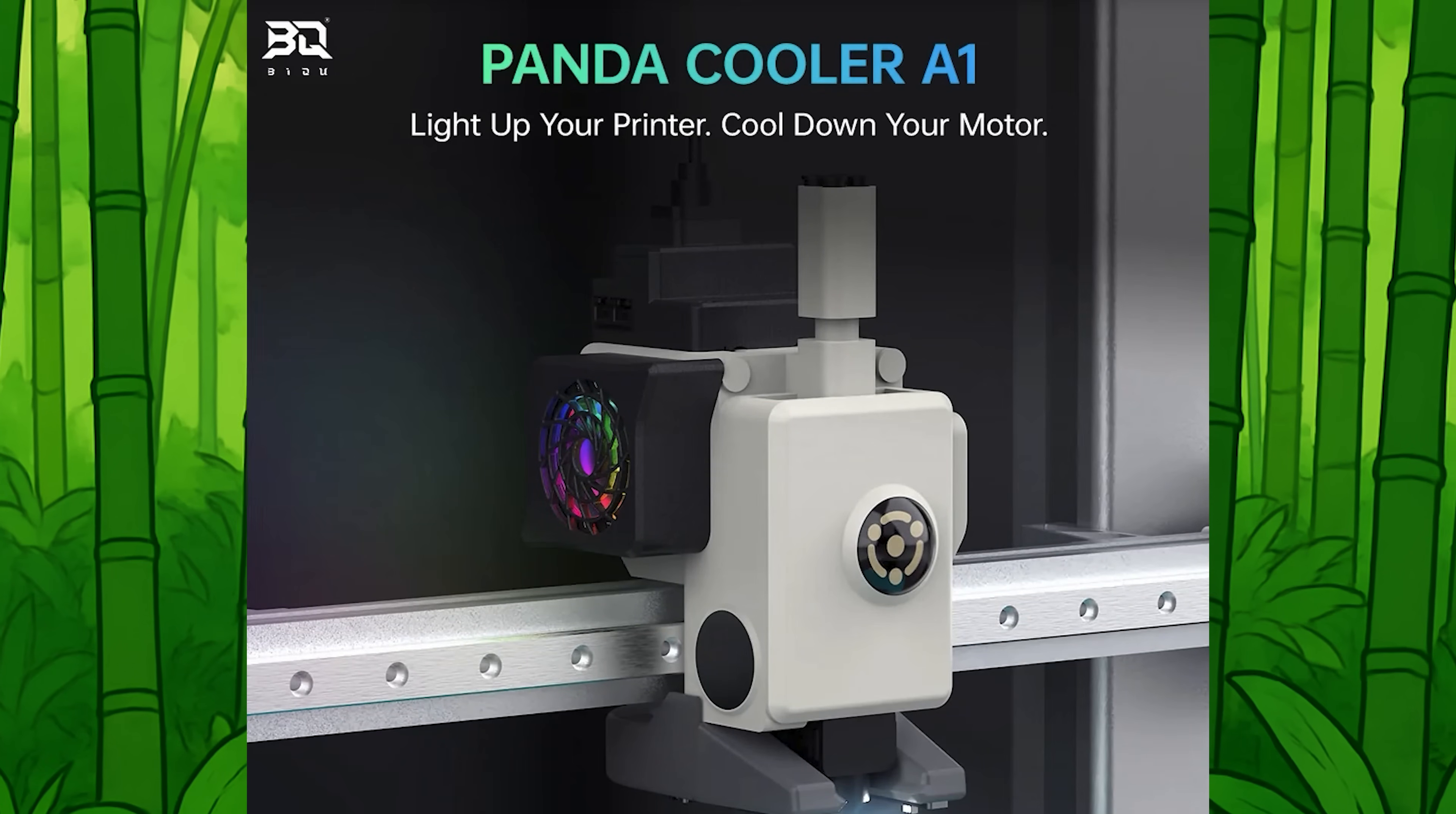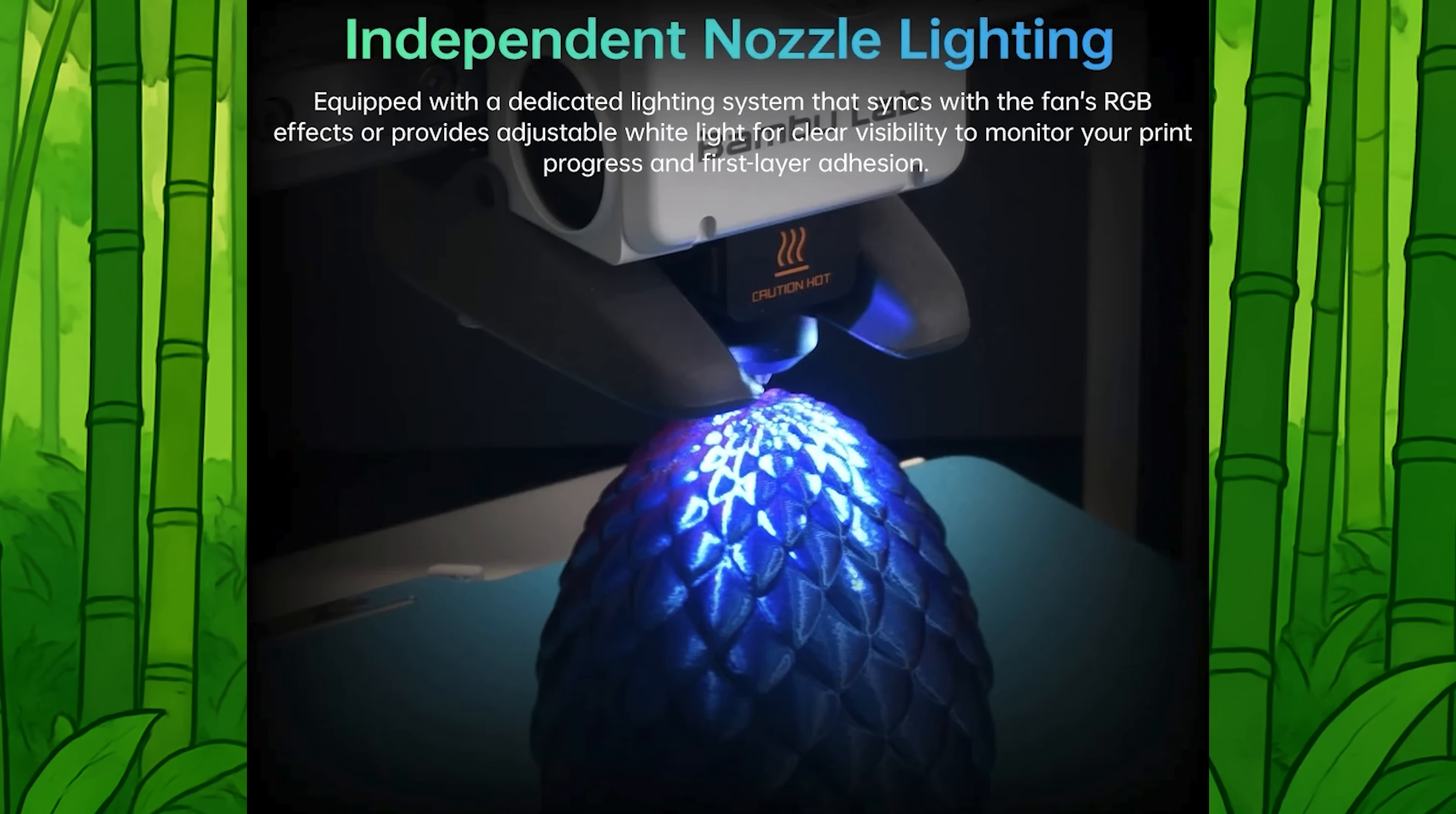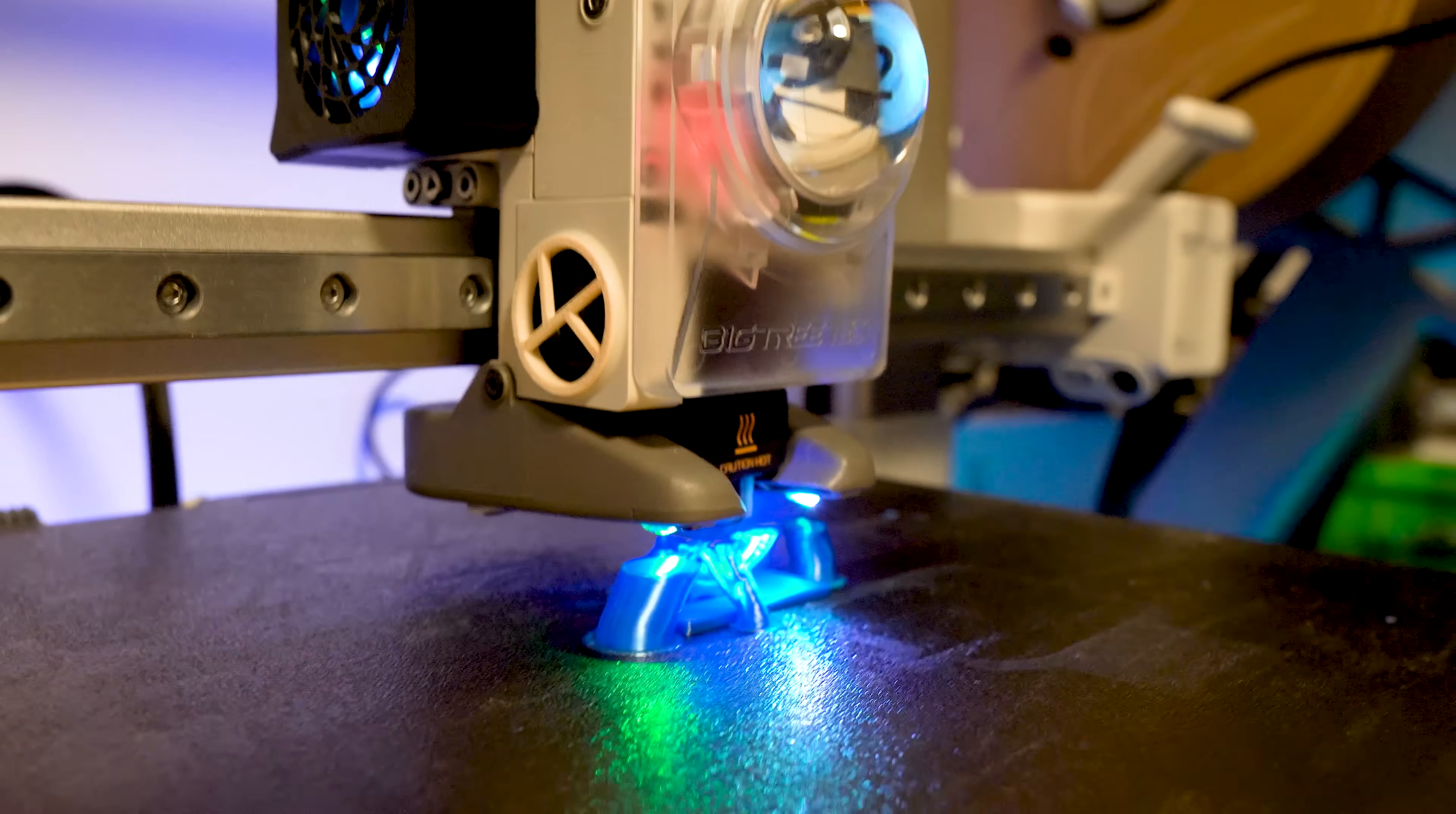As mentioned previously, this upgrade will cool down your extruder motor, which in turn prolongs its lifespan and ensures a smooth operation. It also acts as an indicator for what your printer is doing via the different colors displayed by the RGB lights found inside the fan casing. The nozzle lights also allow you to inspect and monitor your print more clearly if you're away from your printer. A really great addition to your A1 printer.